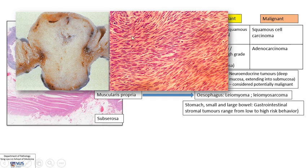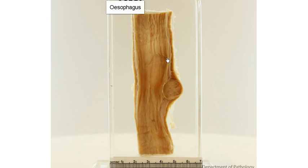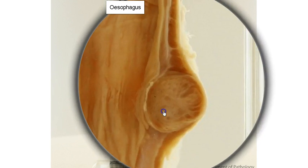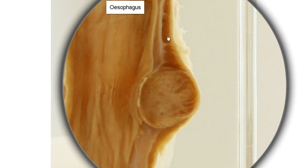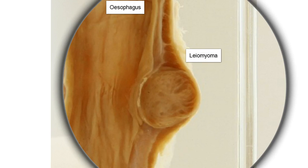Under the microscope, a GIST shows long bundles of very spindle-shaped cells. In contrast, this is an example of a different type of stromal tumor — the esophagus with the mucosal surface visible. There is clearly a tumor arising in the thick muscularis propria layer. It is very well circumscribed and rounded, and this is the classical gross appearance of a leiomyoma.